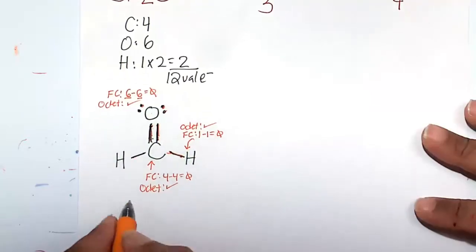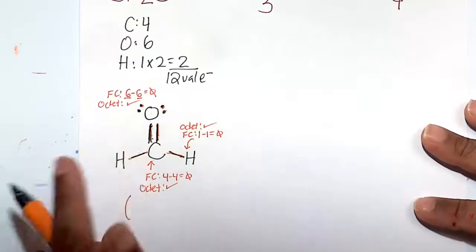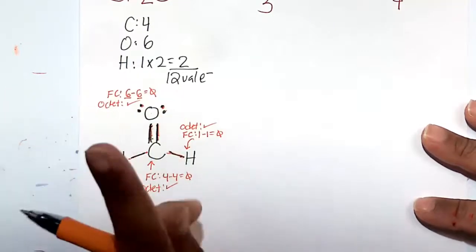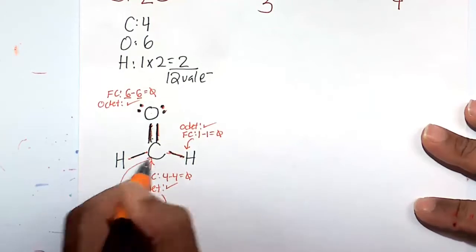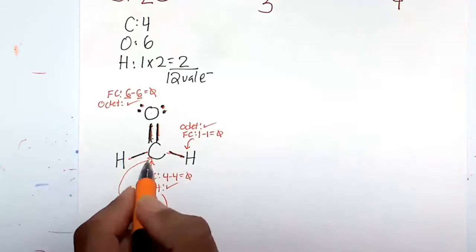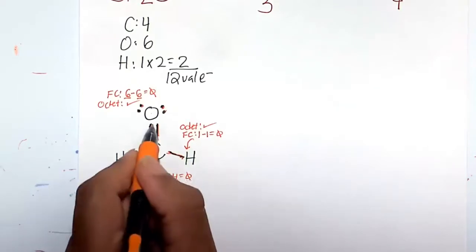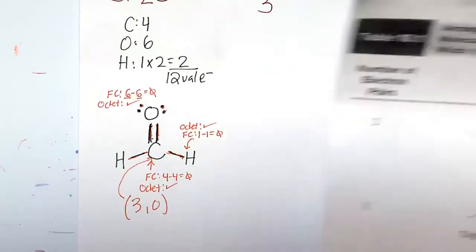Alright, so we have three bonds. One bond here, one bond here, one bond here. Even though it's a double bond, it's still a bond. So we have three bonds and zero lone pairs on the central carbon atom. One, two, double bond is three. Three bonds, zero lone pairs on the central carbon atom.